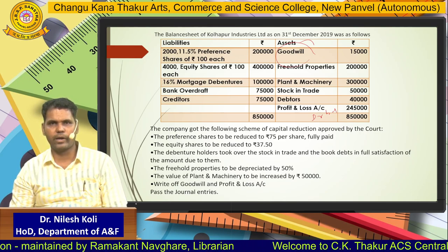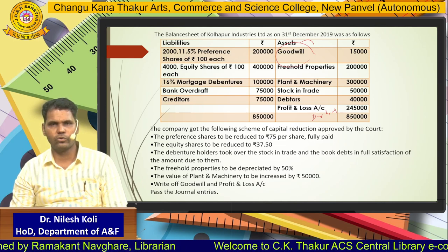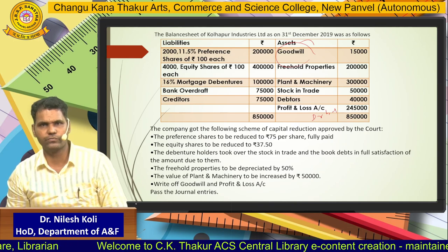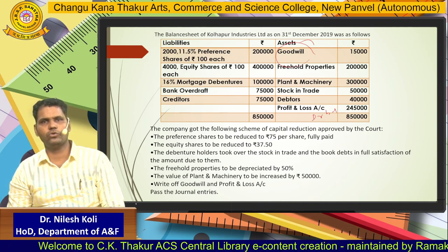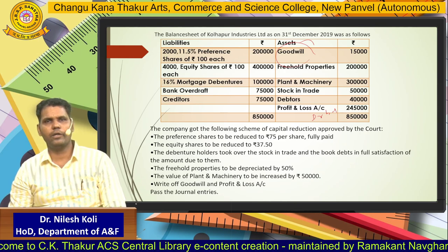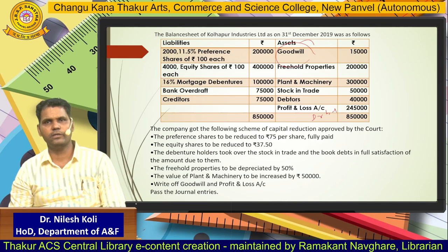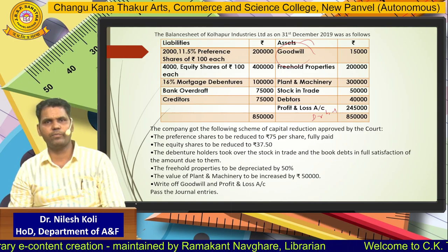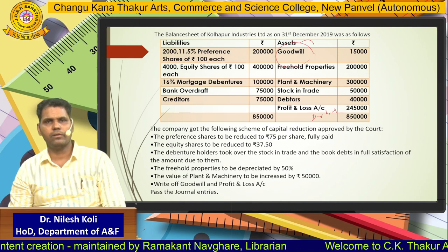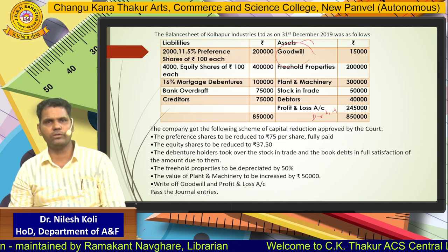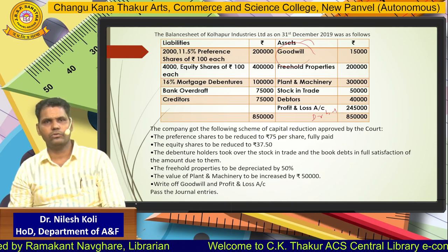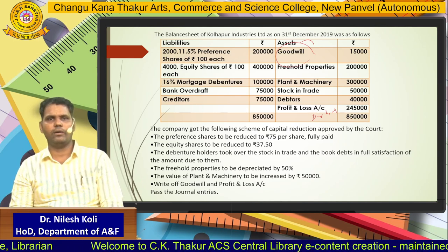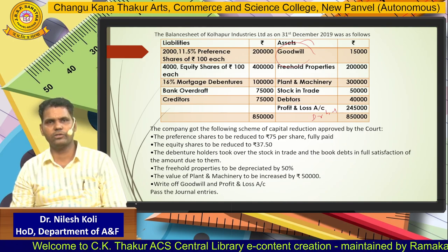The company got the following scheme of capital reduction approved by the court. The scheme given is: preference shares are to be reduced to ₹75 per share fully paid; equity shares to be reduced to ₹37.50; debenture holders took over the stock in trade and the book debts in full satisfaction of the amount due to them; the freehold property to be depreciated by 50%; the value of plant and machinery to be increased by ₹50,000; and write off goodwill and P&L account.